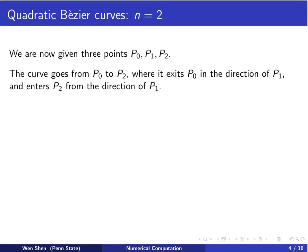The curve goes from P0 to P2 using P1 as the control point. When it exits P0, it goes in the direction of P1. At the end, when it enters P2, it will enter from the direction of P1.